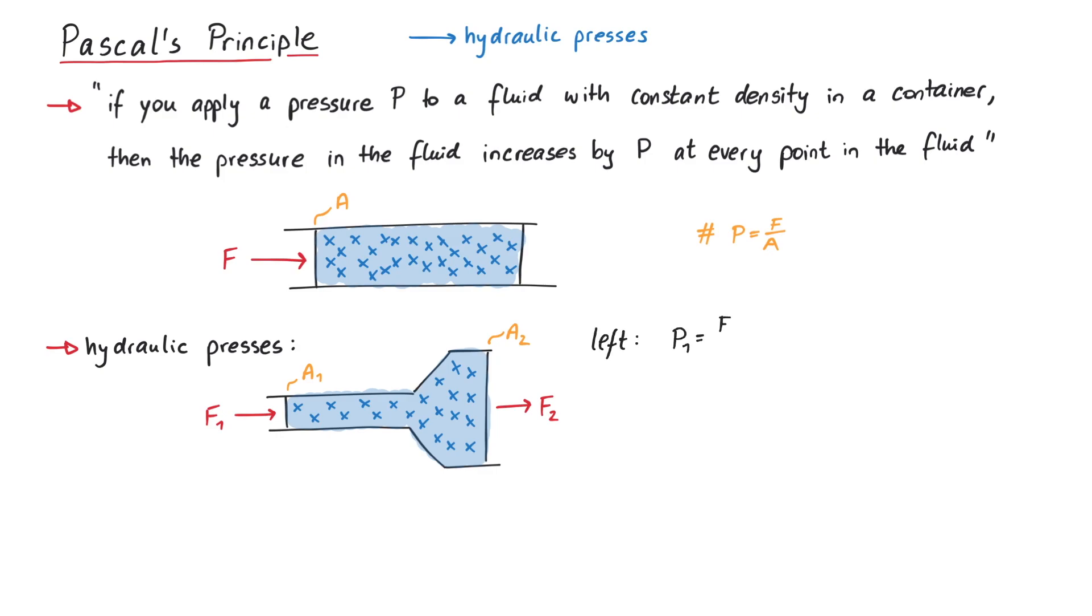On the left, we have P1 equals F1 over A1, and on the right, we have P2 equals F2 over A2. Pascal's principle now tells us that P1 and P2 are the same, which means we can express F2 in terms of the area ratio A2 over A1.